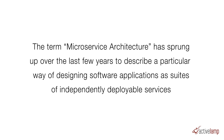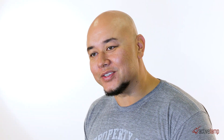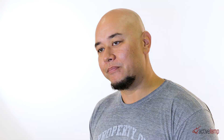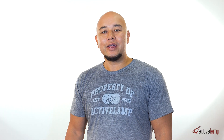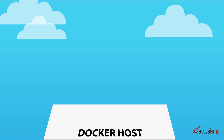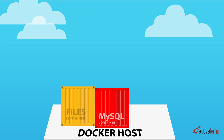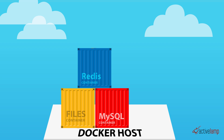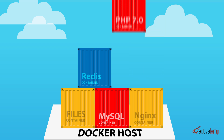Martin Fowler says this about microservices: 'The term microservice architecture has sprung up over the last few years to describe a particular way of designing software applications as suites of independently deployable services.' Independently deployable services — in a nutshell, that's what Docker does for us. Let's take the Drupal app I mentioned earlier and break it up into independently deployable services. Let's separate the database, file system, and caching backend into separate services, and also separate the web server from the PHP engine. We now have five separate services: a web server, a PHP engine, a database server, a file server, and a caching backend.